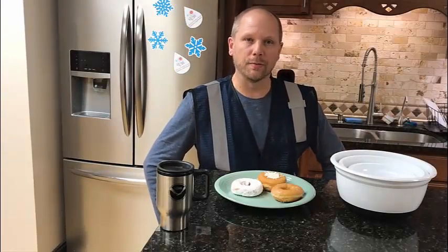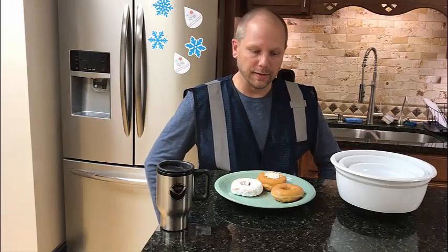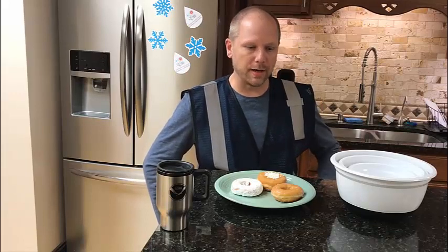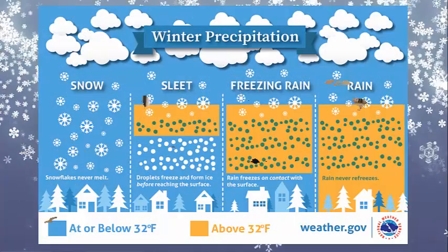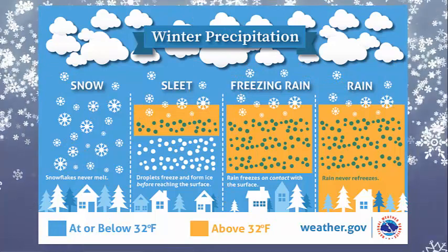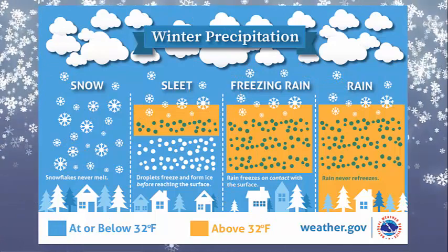Hello everybody, I'm Dr. Donut coming to you from the National Weather Service office in Columbia, South Carolina. Today we're talking a little bit about South Carolina and Georgia Winter Preparedness Weeks, and today we're talking about the different types of precipitation that we see in the wintertime.